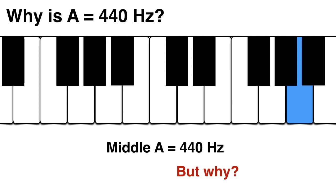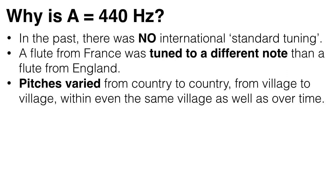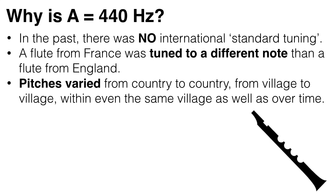But why is it exactly 440 hertz? In the past, there was no international standard tuning. So a flute from France was tuned to a different note than a flute from England, meaning they couldn't be played together — they would sound out of tune with each other. So a touring musician would have to take several flute extensions with him to be able to play in tune in different locations.